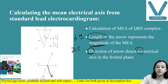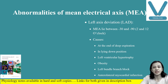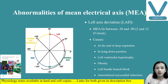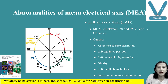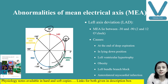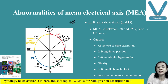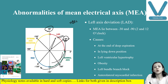Now we will discuss abnormality in the mean electrical axis. The normal mean electrical axis is 0 to 90 degrees, though in some books it is given as minus 30 to plus 120 degrees. If the mean electrical axis is between minus 30 to minus 90 degrees, this is known as left axis deviation. When calculating the QRS algebraic sum in leads 1 and 3, if your arrow points to this region, you have left axis deviation.